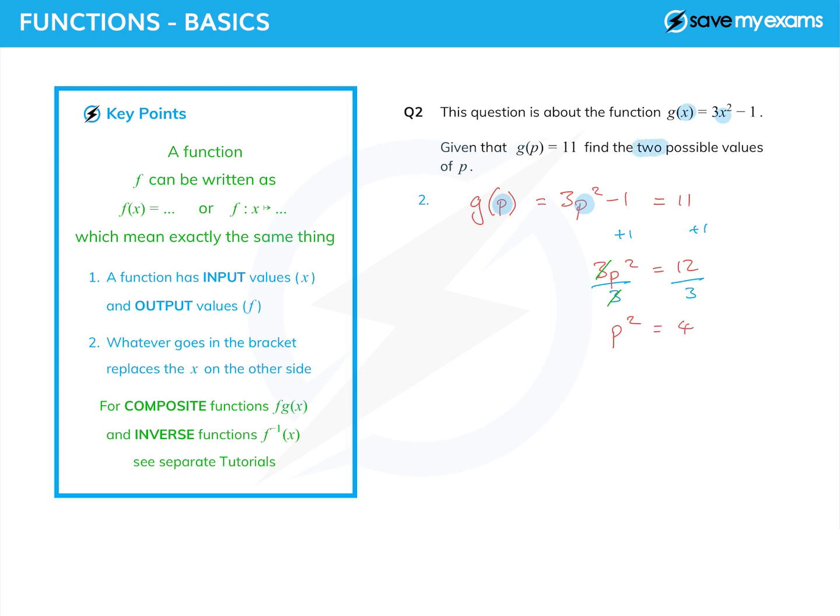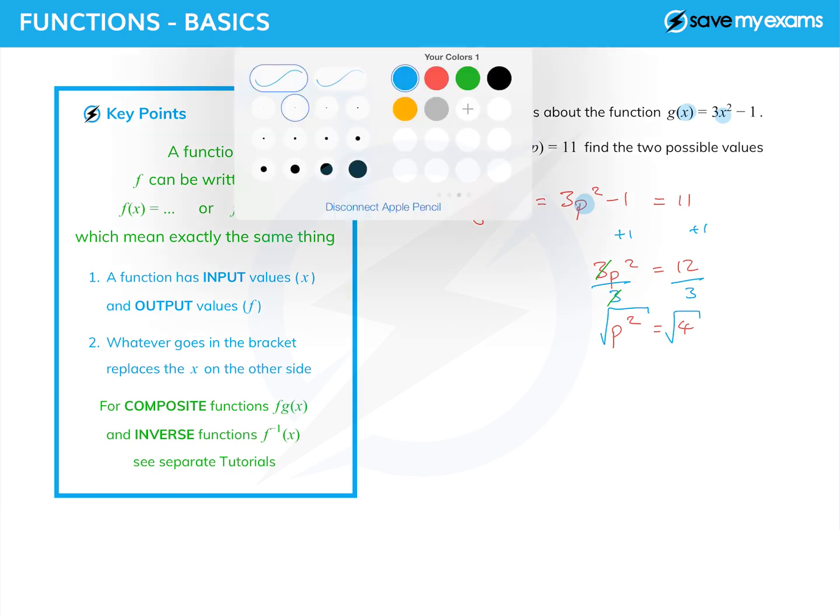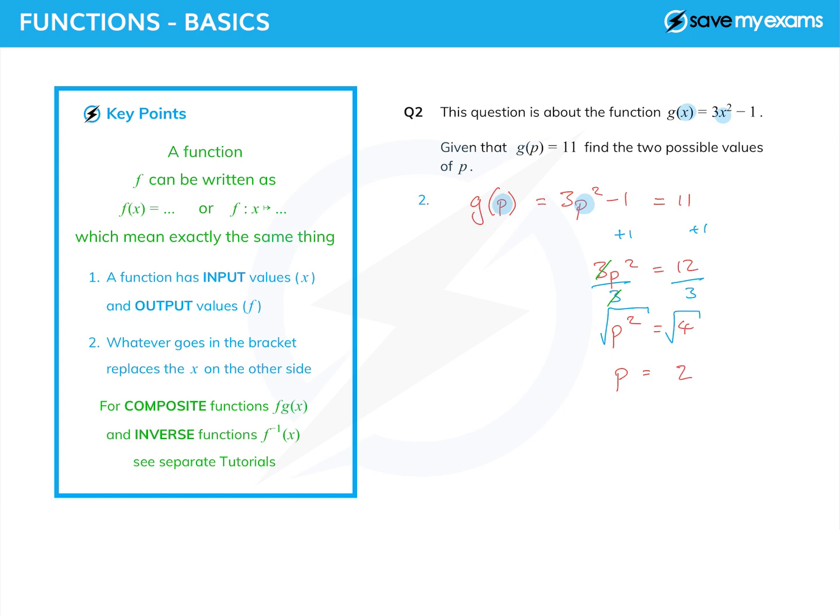Now notice the question says the two possible values of p. Well where do they come from? Remember that when I square root something, I can get a positive value and a negative value. So p is equal to, well obviously 2, but also it could be minus 2, because minus 2 also squares to give 4. So don't miss that out. When you square root 4, you get plus or minus 2.